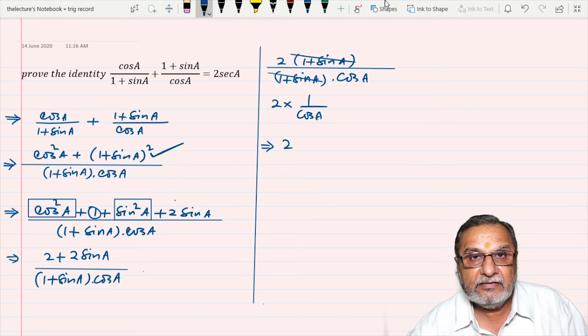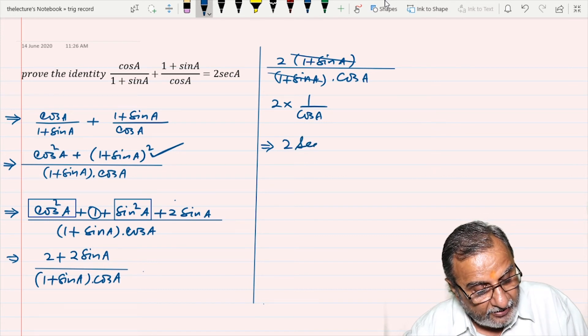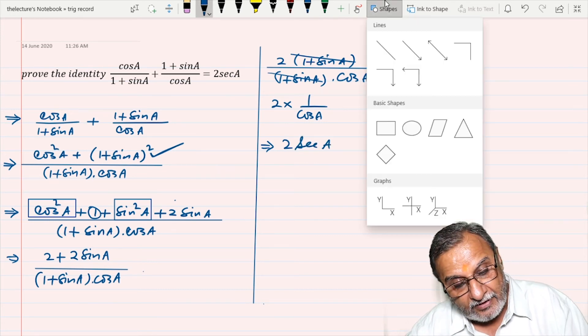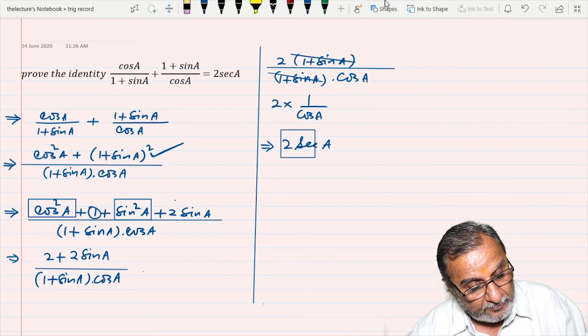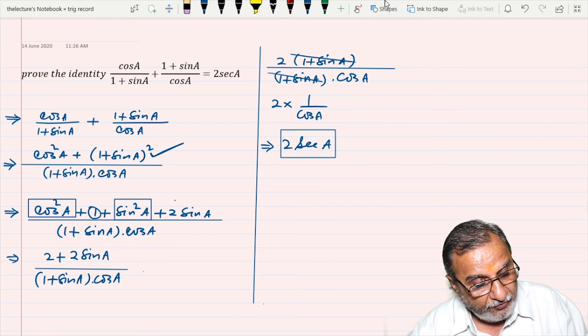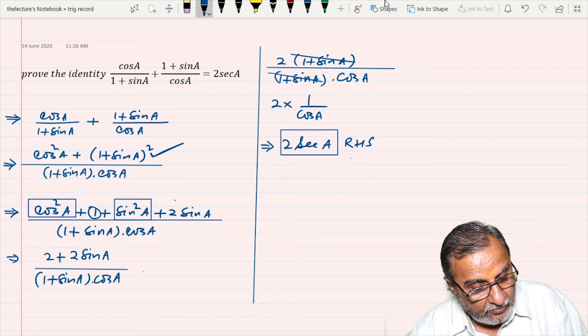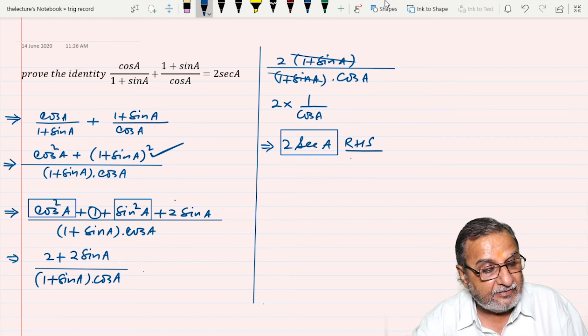1 upon cos A, that is sec A. So it is our final stage of the proof, and we have proven and got the RHS, right-hand side.